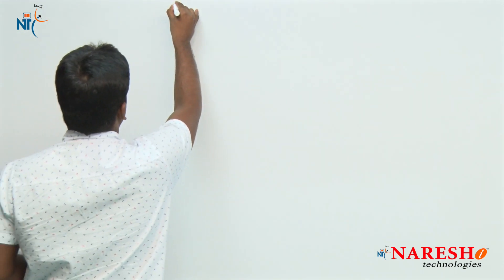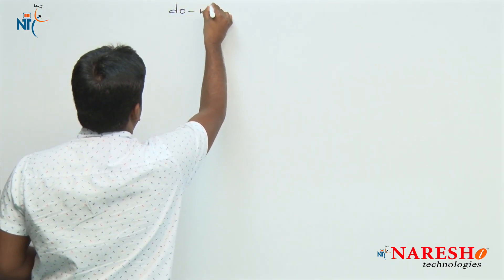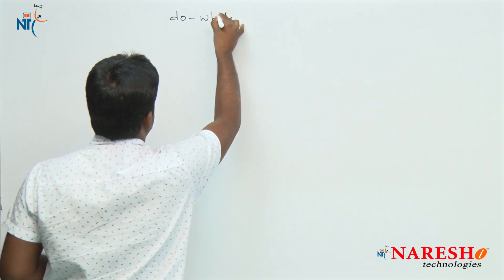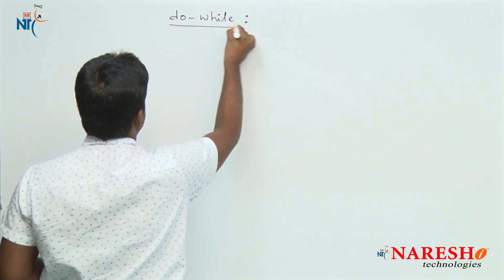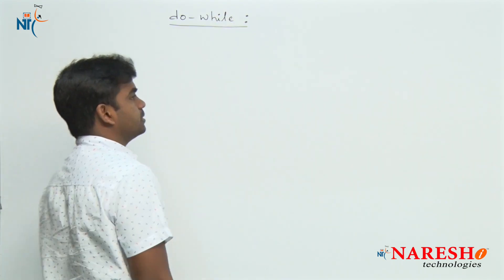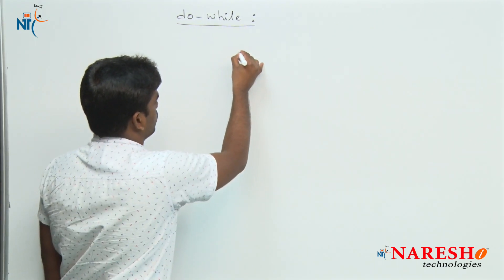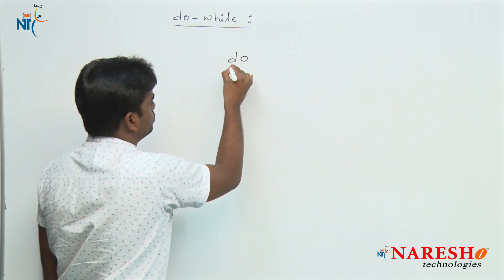Whatever the programming language is, in case of a logical implementation, we use a do-while loop. Here is a do-while loop and first of all we will see the syntax. What is the do-while loop syntax? In any programming language it is almost a common syntax: do, followed by one brace.